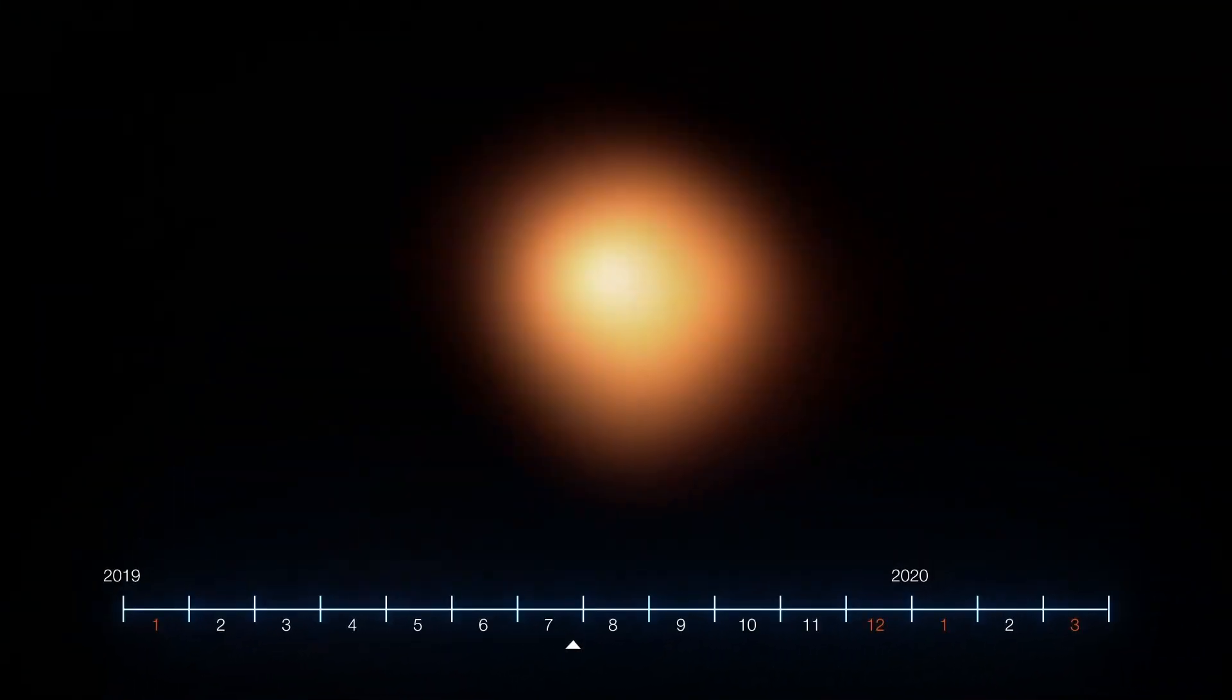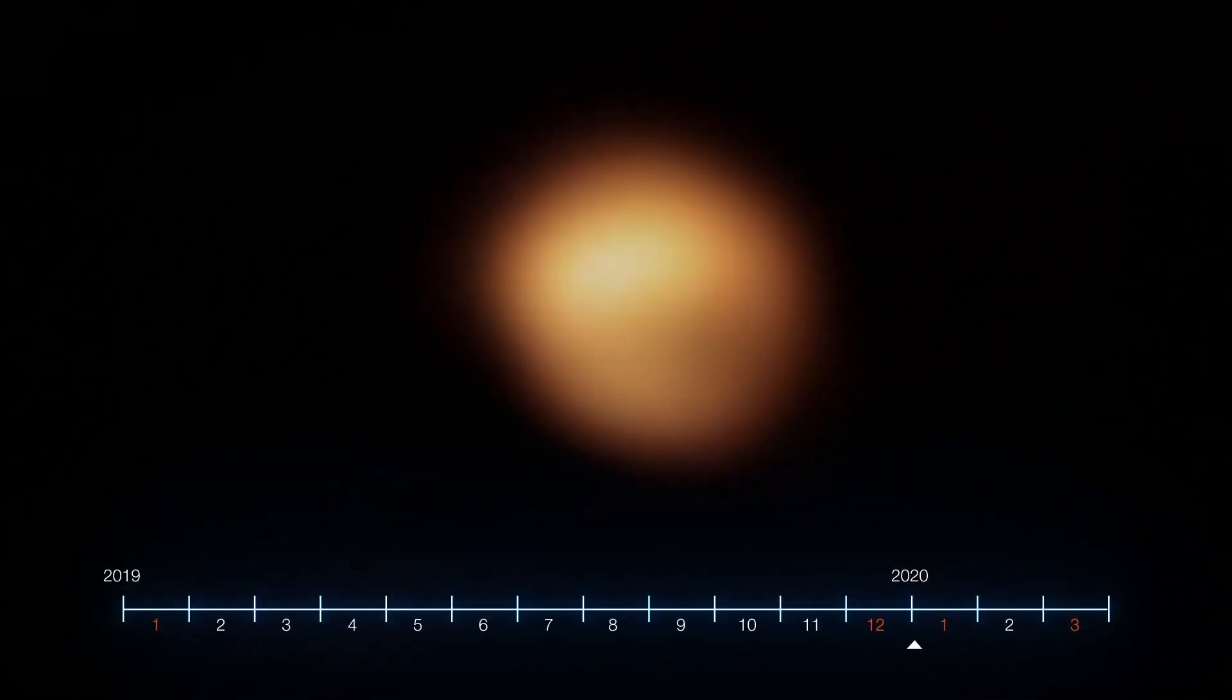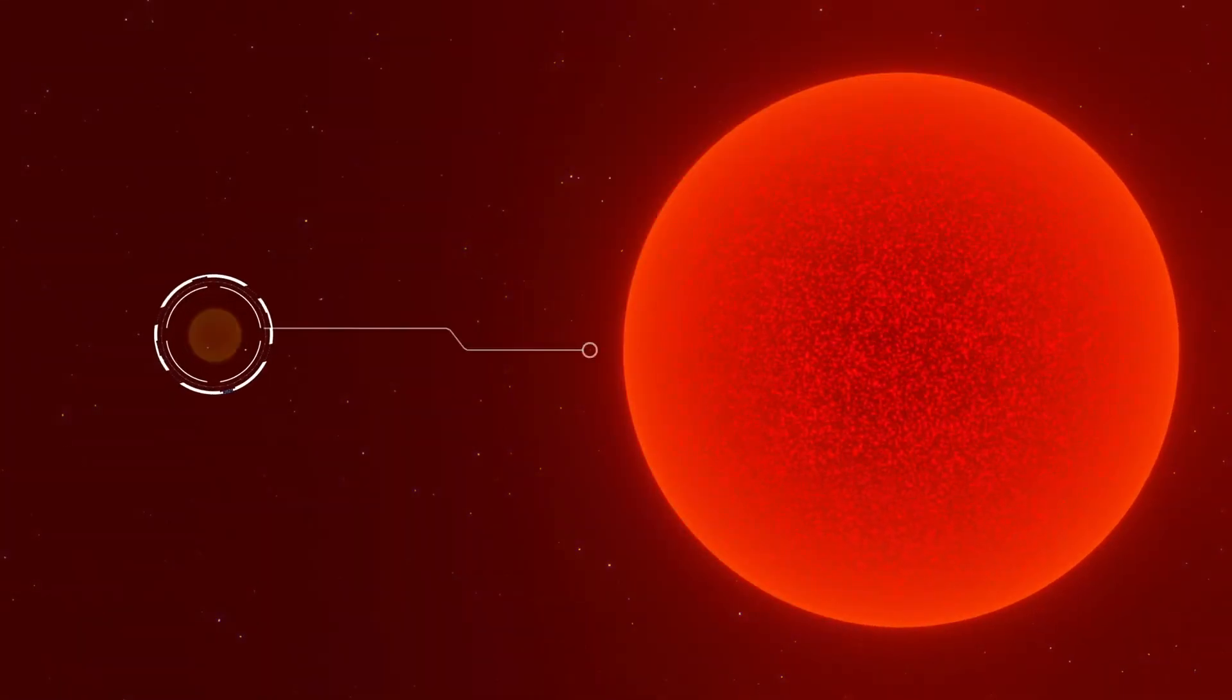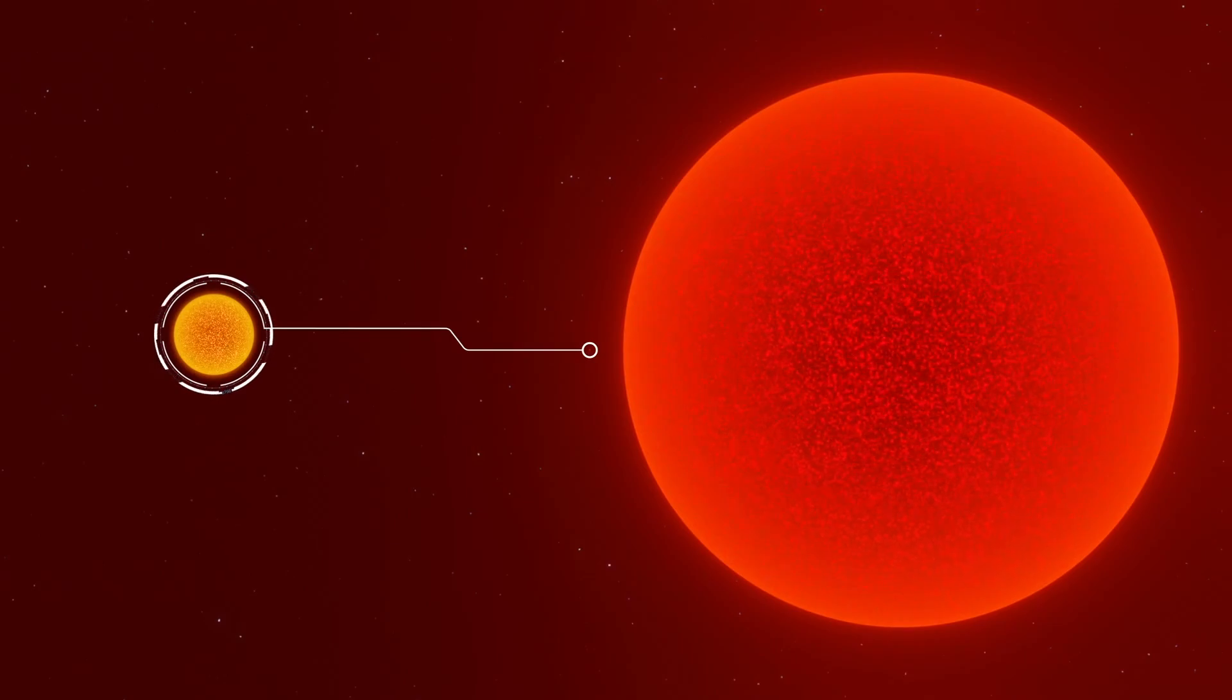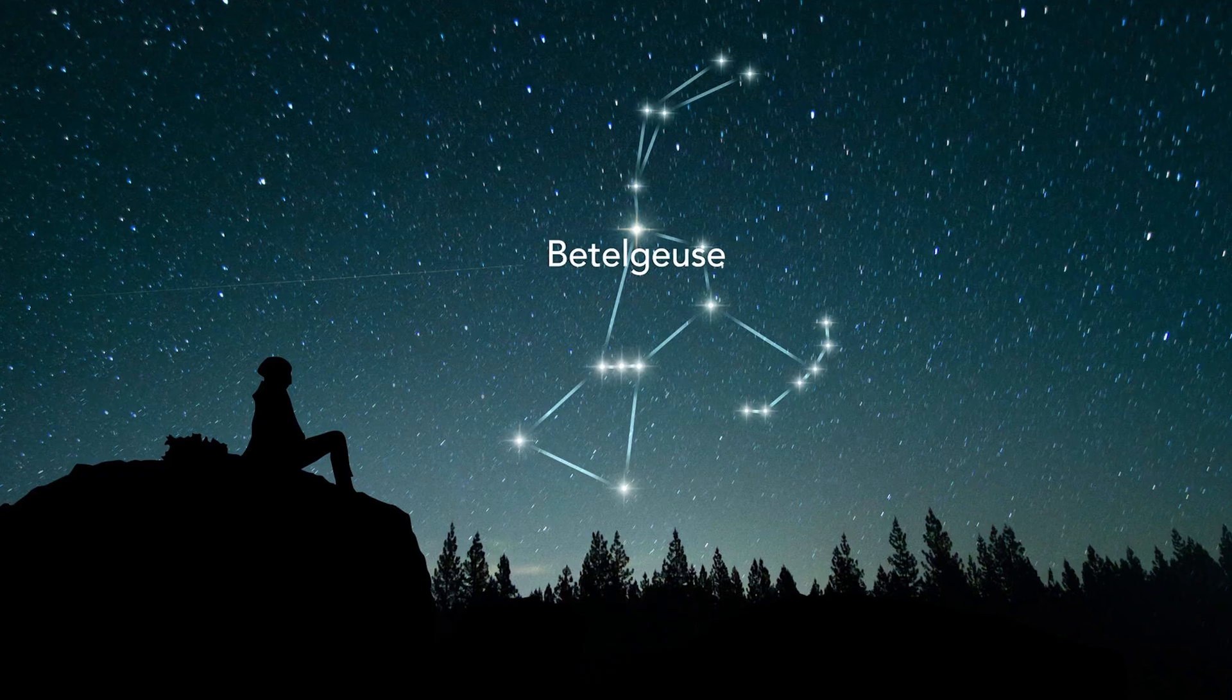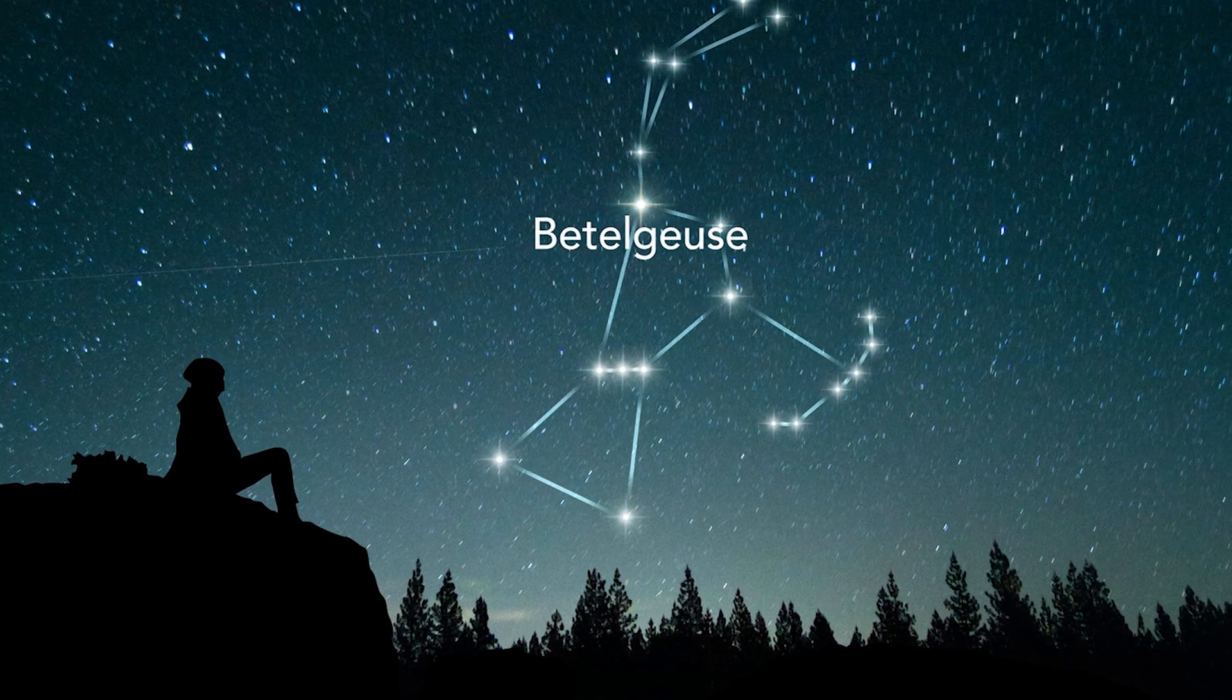Betelgeuse's enormous size and brightness have made it a subject of fascination and study for centuries. With a diameter approximately 700 times that of our sun, it stands as a colossal figure in our galactic neighborhood, easily visible to the naked eye from Earth.